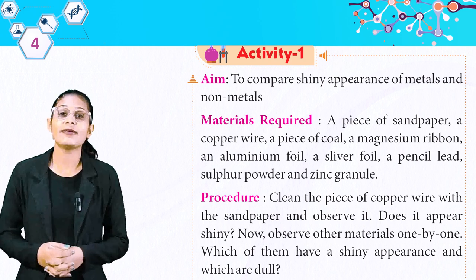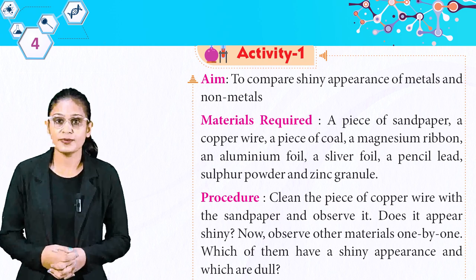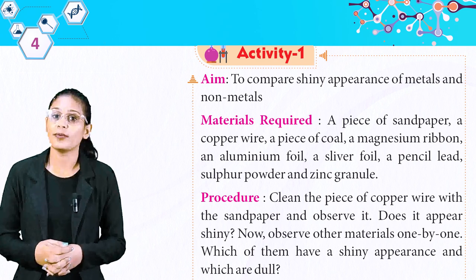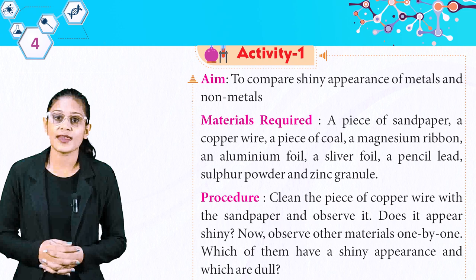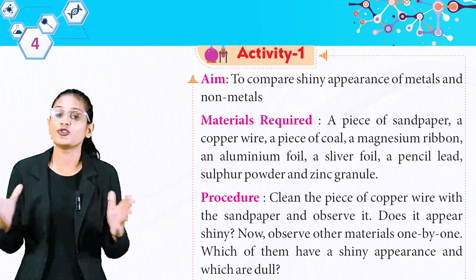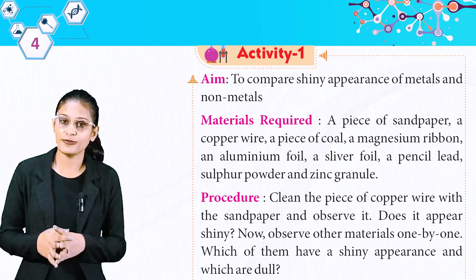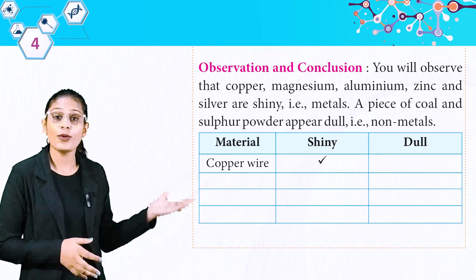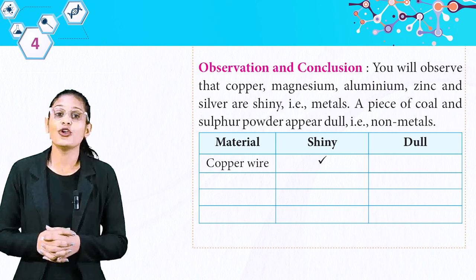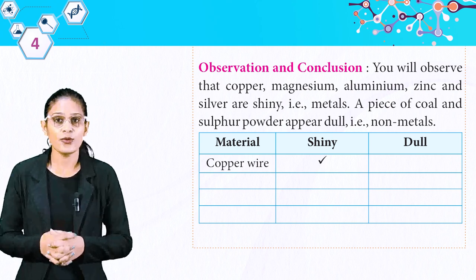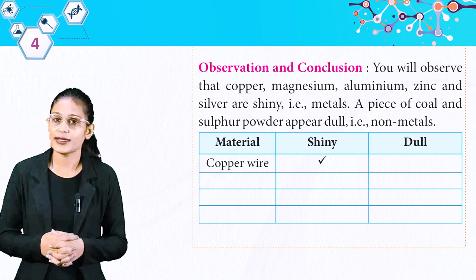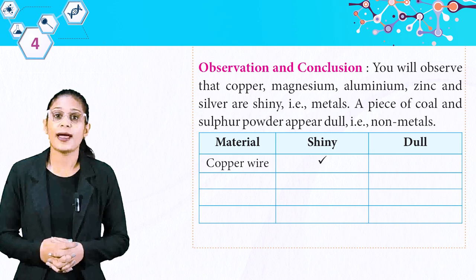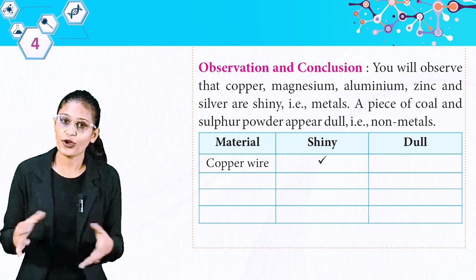Procedure: Clean the piece of copper wire with sandpaper and observe it — does it appear shiny? Now observe other materials one by one. Which of them have a shiny appearance and which are dull? Observation and conclusion: You will observe that copper, magnesium, aluminium, zinc and silver are shiny — that means they are metals. A piece of coal and sulfur powder appear dull — that means they are non-metals.